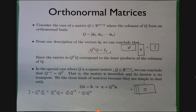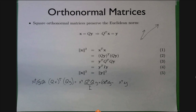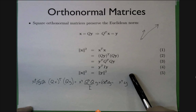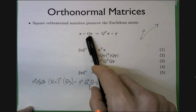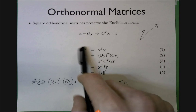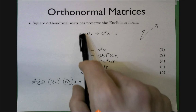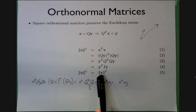Just quickly recapping: this is what we finished with last time. It says that if I take a vector and apply an orthonormal matrix to it — it doesn't even have to be square, all that matters is it has orthonormal columns — then the length of the vector doesn't change after the application. So if I take y and get a new vector x by transforming using Q, then the norm of x equals the norm of y.